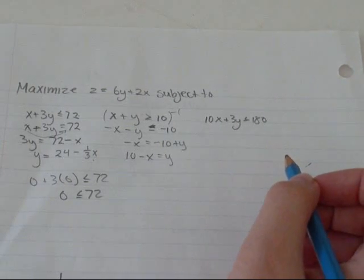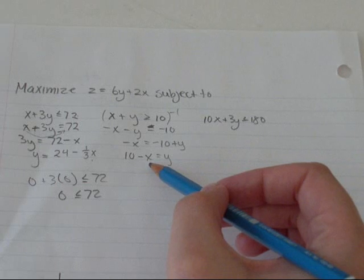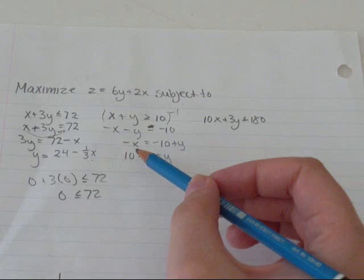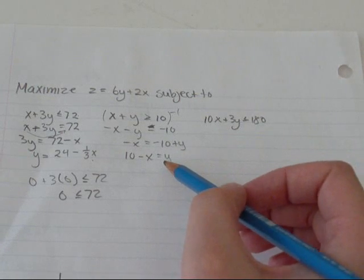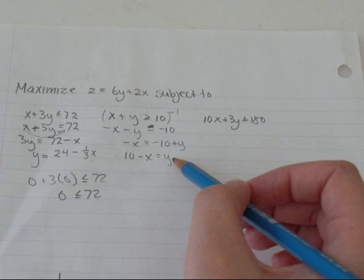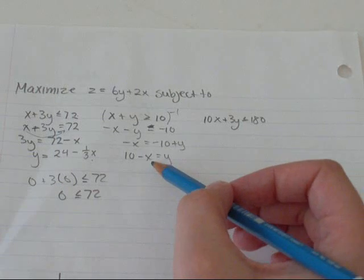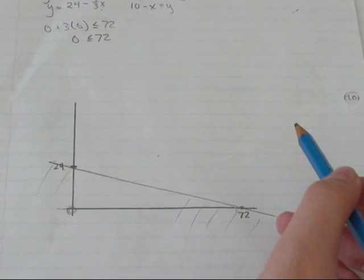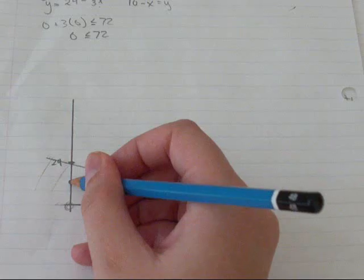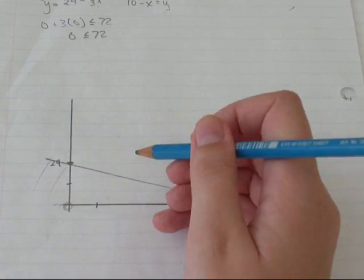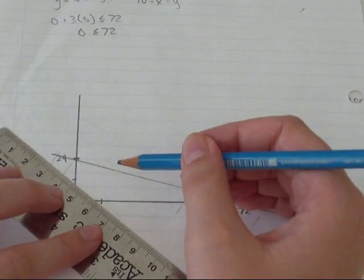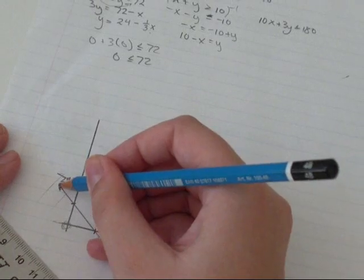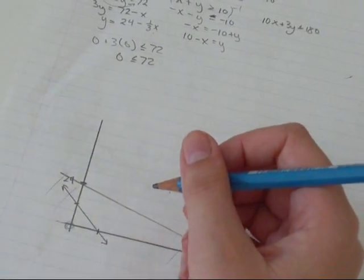And then to graph that, I'm going to think when x equals 0, then it'll be 10 minus 0 equals y. So y is going to be 10. When y is 0, negative 10 plus 0 is negative 10 equals negative x. So x equals 10. So both my x and y intercept are going to be 10. So let's say that's around here. I'm going to draw in my line. And these lines really should have the little arrows on the end because they do go on forever.